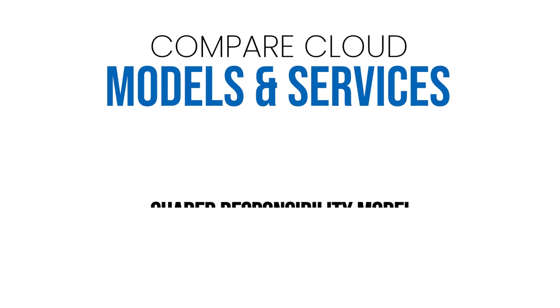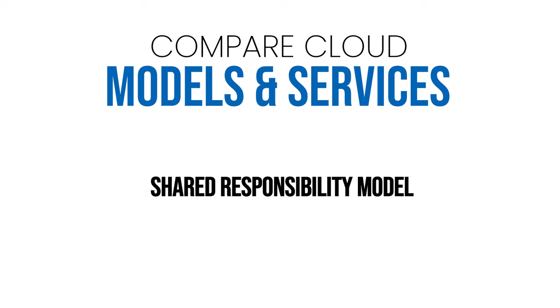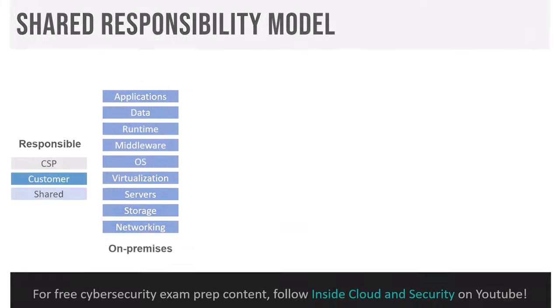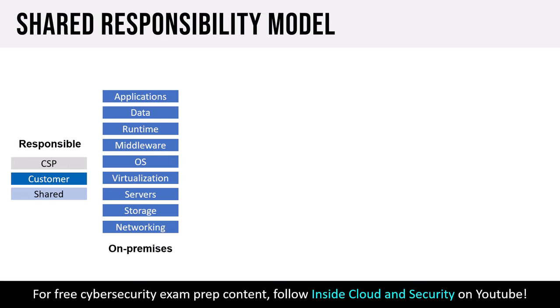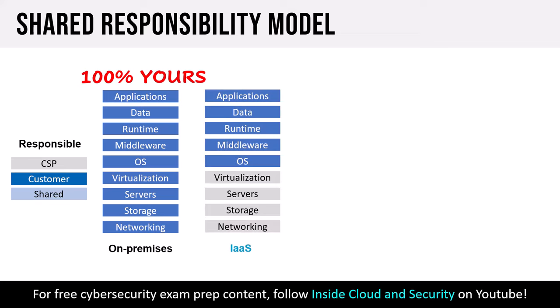Let's talk about the shared responsibility model as it applies to IaaS, PaaS, and SaaS, helping to differentiate CSP versus customer responsibility. When on-premises, responsibility belongs 100% to the customer — from resiliency and availability down to the wire. Moving into IaaS, the cloud service provider takes on care and feeding of the virtualization infrastructure: servers, storage, networking, and the hypervisor. We're really just consuming virtual machines running on top of the hypervisor.